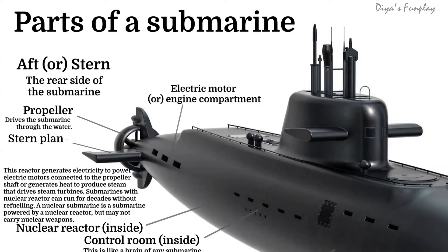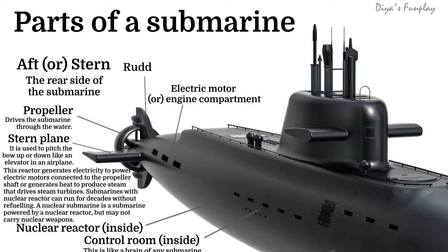Stern plane. The stern plane is used to pitch the bow up or down, like an elevator in an airplane. Rudder — the rudder is used to steer the submarine to the left and to the right.